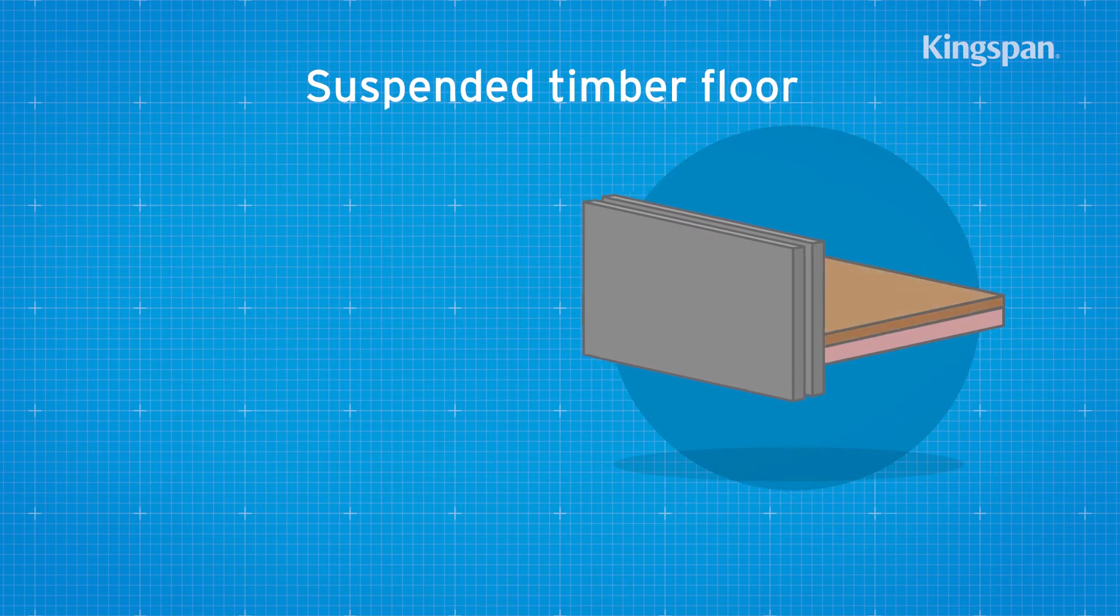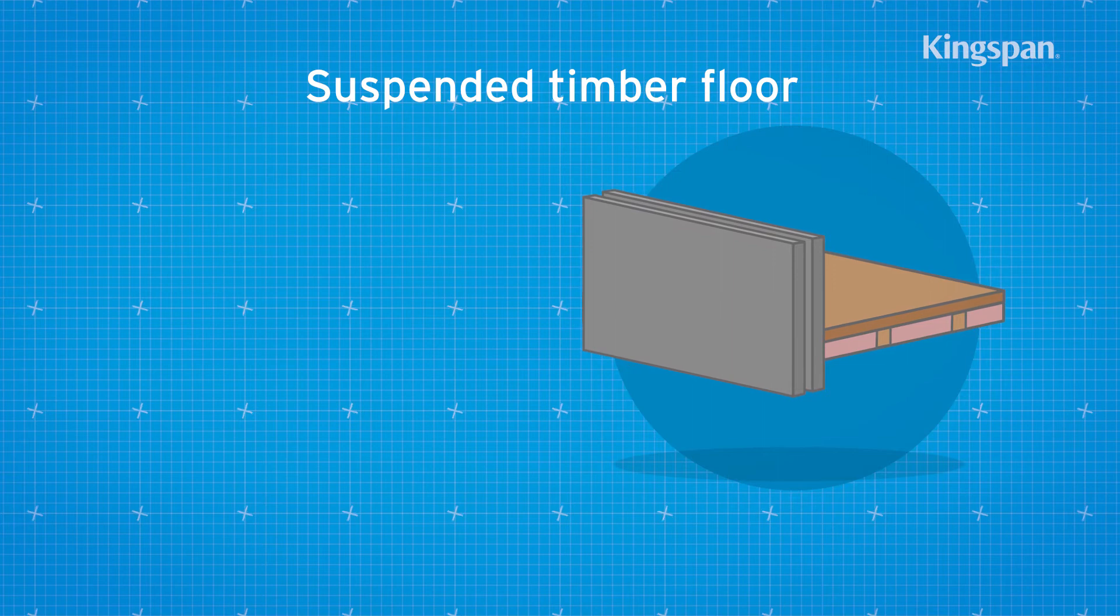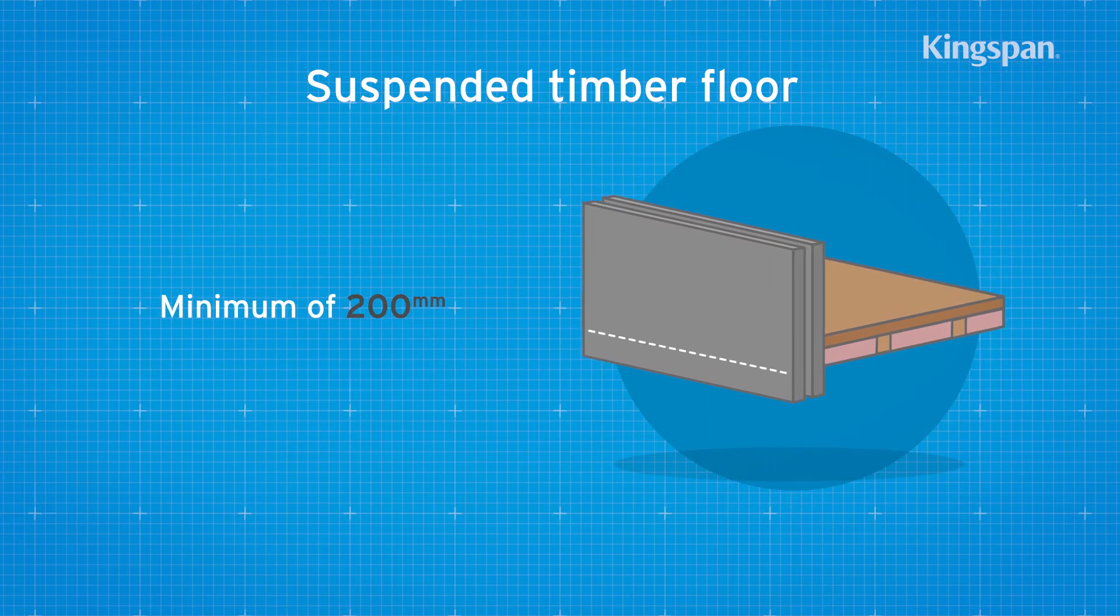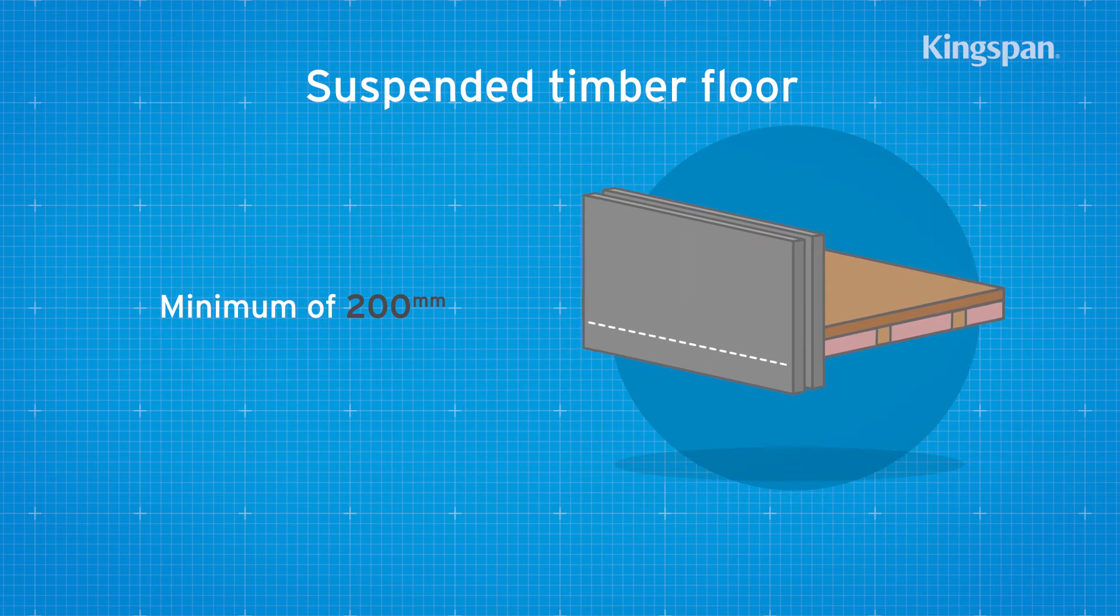For suspended timber floors, wall ties start a minimum of 200 mm below the top surface of the ground floor perimeter insulation upstand.